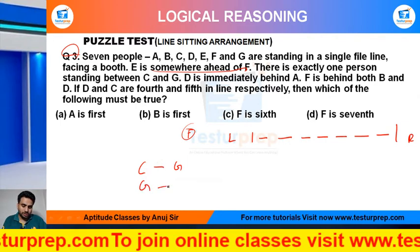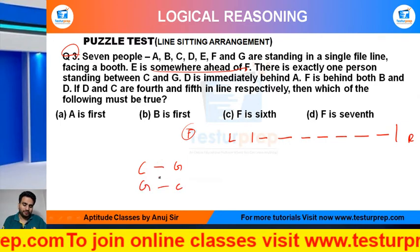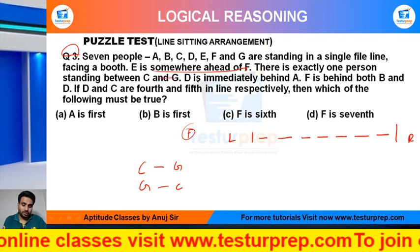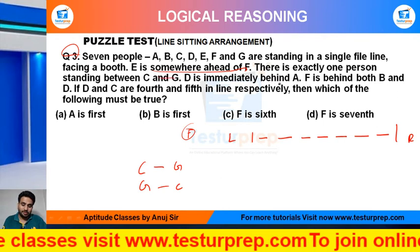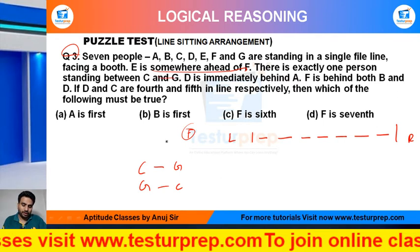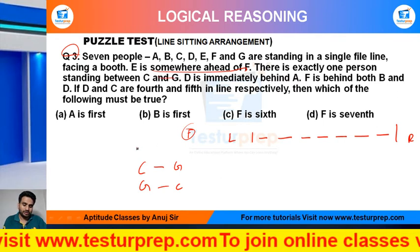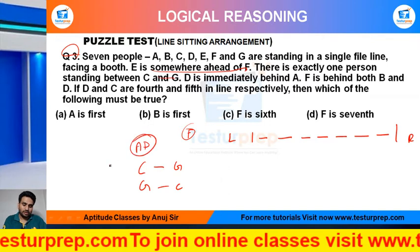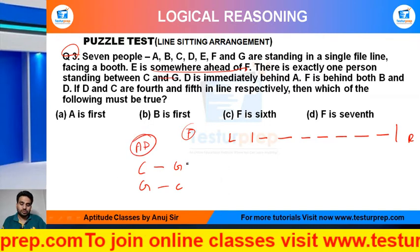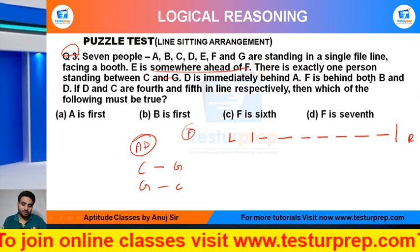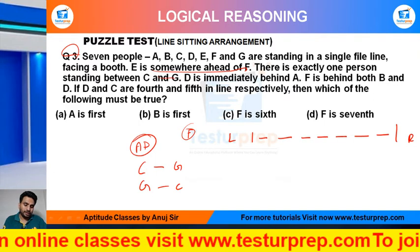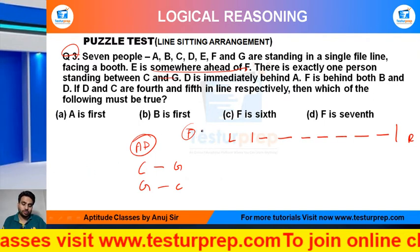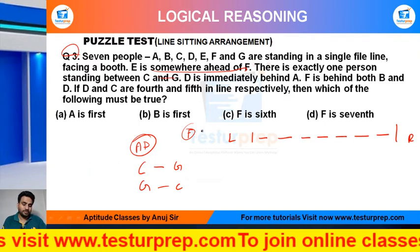Theek hai, yeh position aise bhi meri fill up ho sakti hai. So there is exactly — yeh kaam hua. D is immediately behind of A — A ke just baad mein D aayega. Yeh exact jo haan mujhe given hai. F is behind both B and D — F jo hai B and D dono se hi baad mein hai.